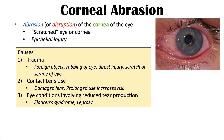There are a variety of categories of causes of corneal abrasions. Traumas, foreign objects, and rubbing of the eye are common ones. If there is debris in the eye and you try to rub it, that can cause a corneal abrasion. Direct injury — if something strikes the eye or you scratch your eye with your nail or another object — can also cause a corneal abrasion. Foreign objects like sand getting into your eye and rubbing it are also common causes.